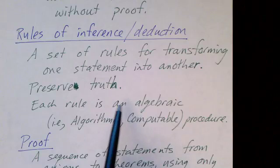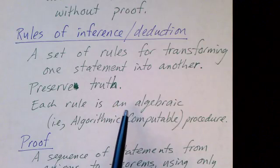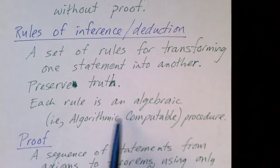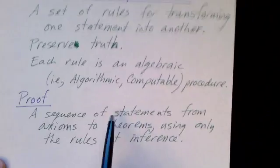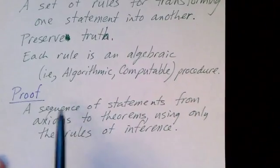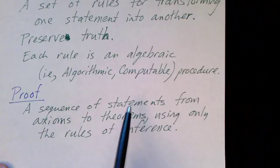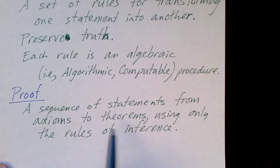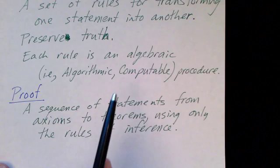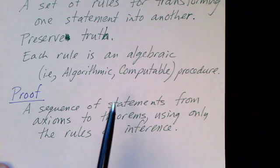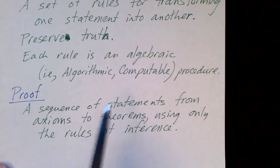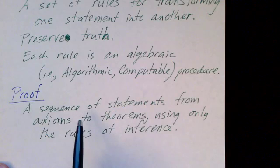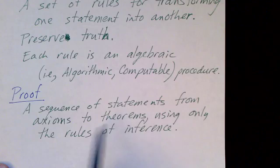We can perform these manipulations or transformations automatically with a computer. And so what is a proof then? A proof is a sequence of statements. We start with axioms and we use the rules of inference, deriving one statement from the previous statements in sequence.